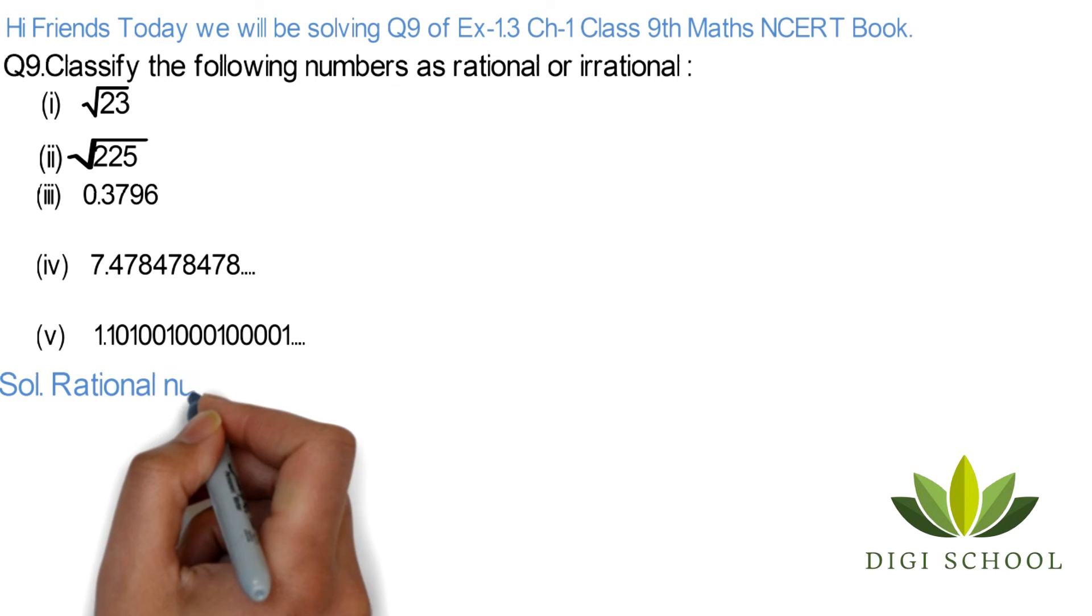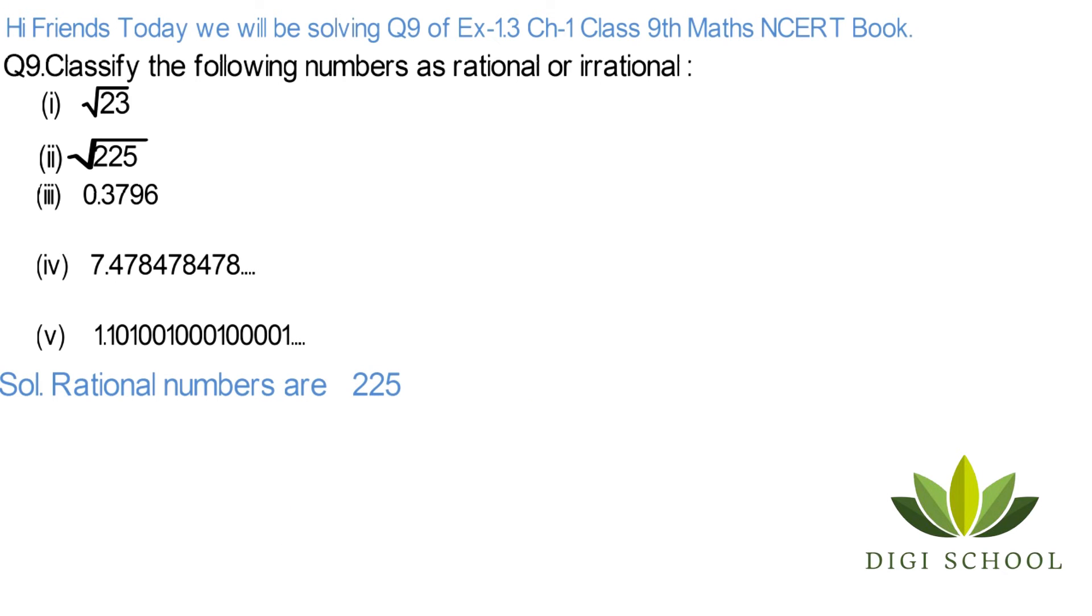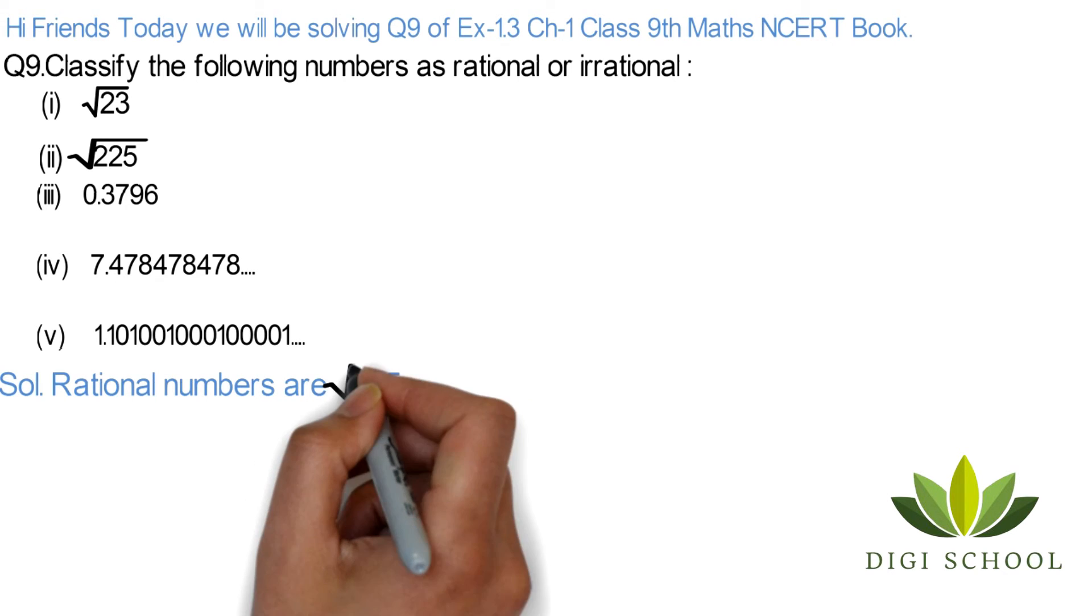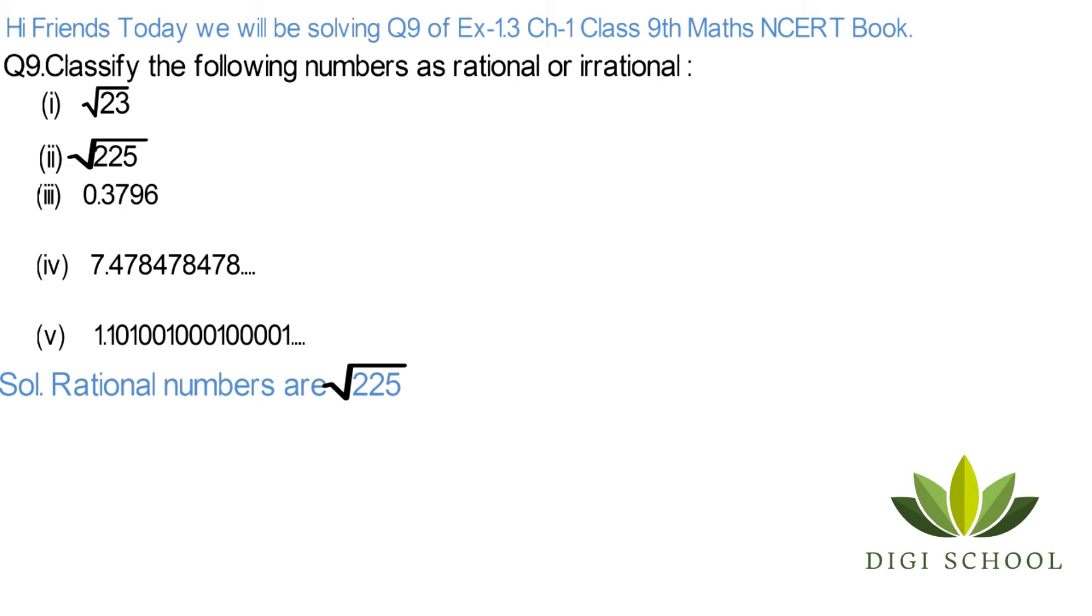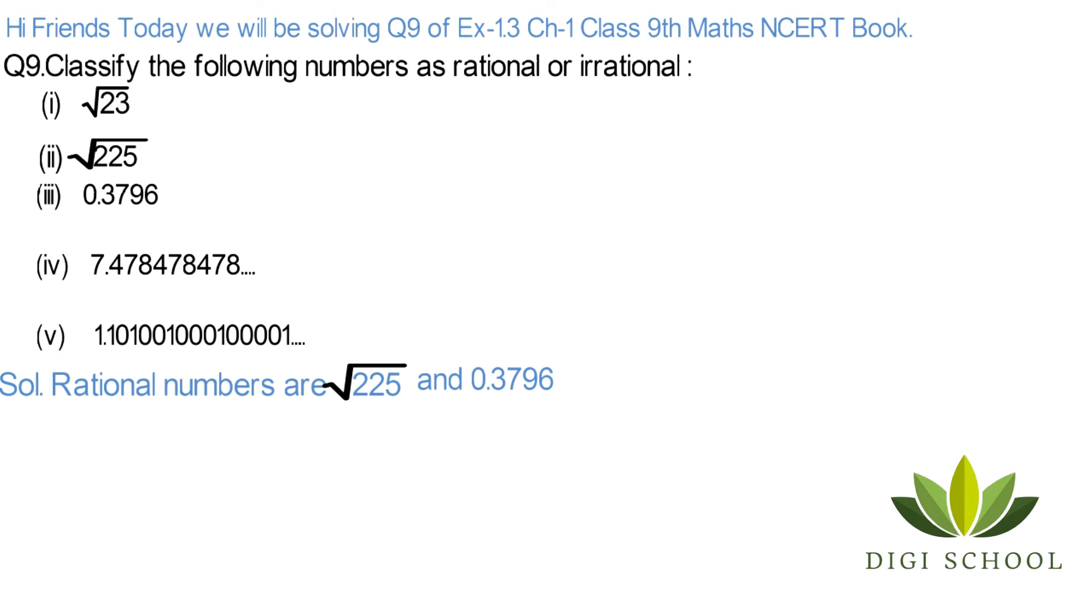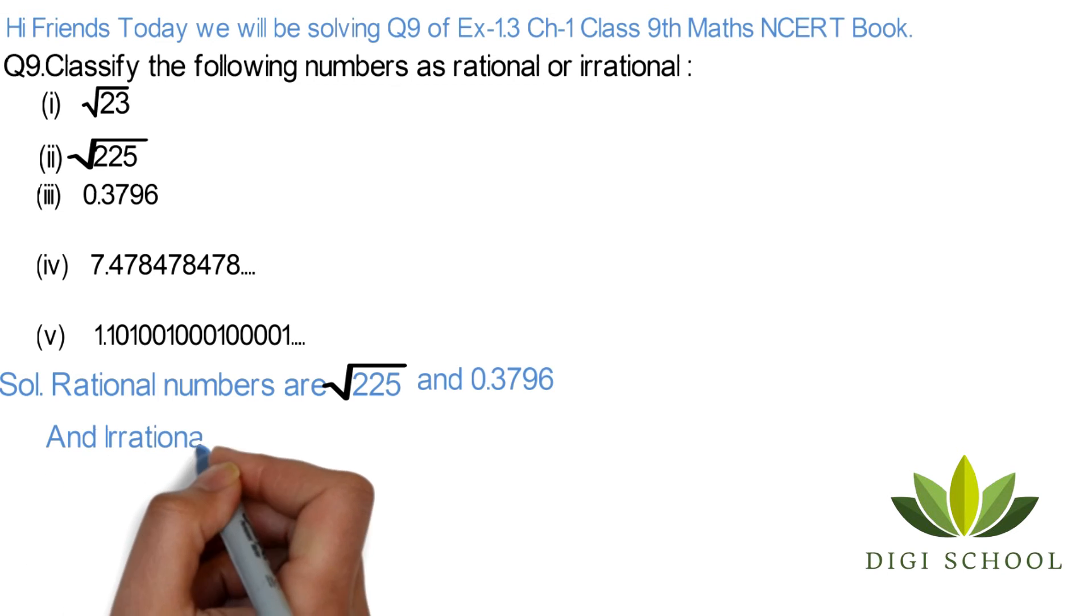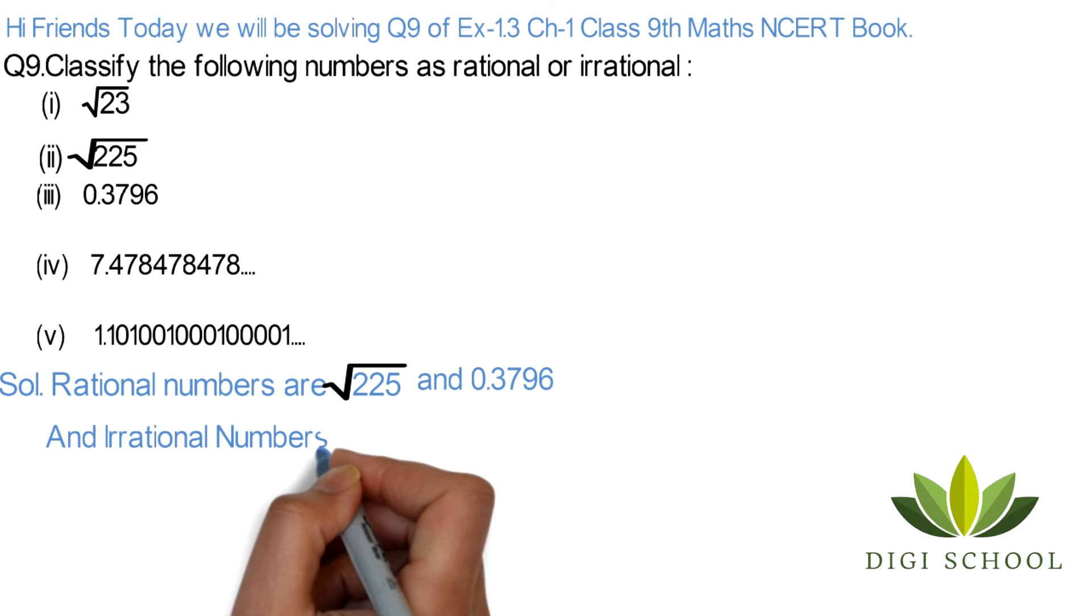Solution: Rational numbers are Root 225, and we know that if we find the square root of 225 it is 15, and 0.3796 is also a rational number.